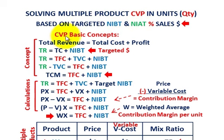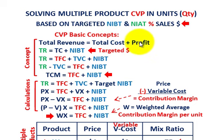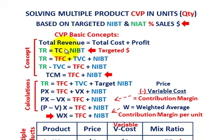For a cost volume profit analysis the basic concept is this: you're going to have some total revenue, and that total revenue is going to equal your total cost plus some profit. Our formula is TR equals TC plus some net income before taxes — some targeted dollars for net income.